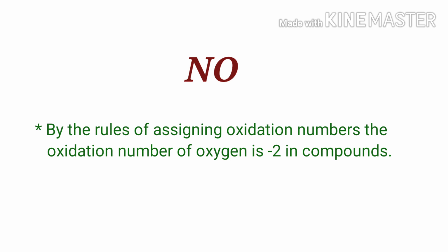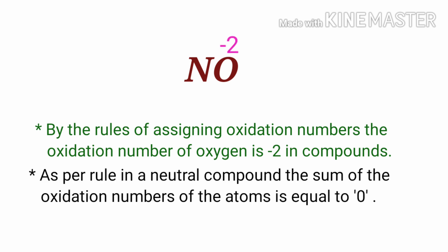By the rules of assigning oxidation numbers, the oxidation number of oxygen is minus two in compounds. As per rule in a neutral compound, the sum of the oxidation number of atoms is equal to zero. So, the oxidation number of nitrogen must be plus two.